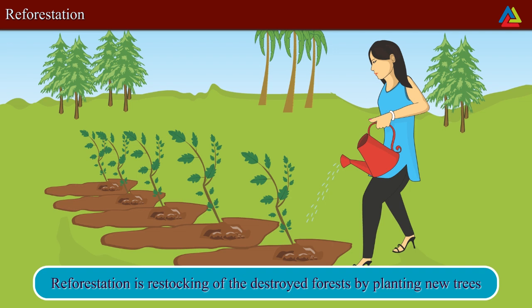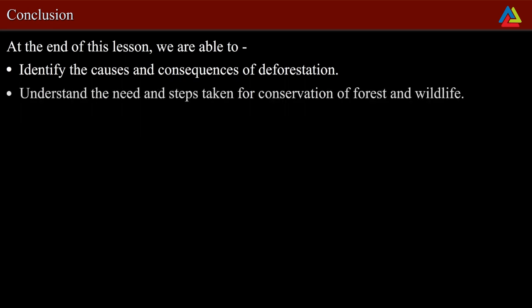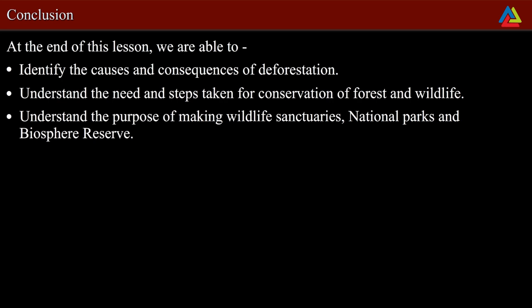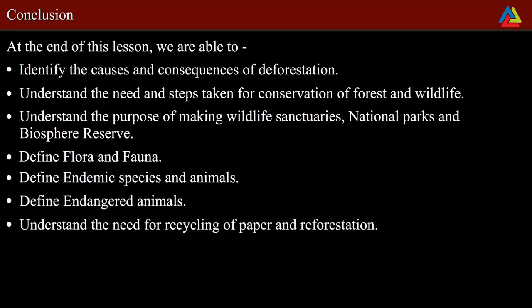In this lesson we are able to identify the causes and consequences of deforestation, understand the need and steps taken for conservation of forest and wildlife, understand the purpose of making wildlife sanctuaries, national parks and biosphere reserves, define flora and fauna, define endemic species and animals, define endangered animals, and understand the need for recycling of paper and reforestation.